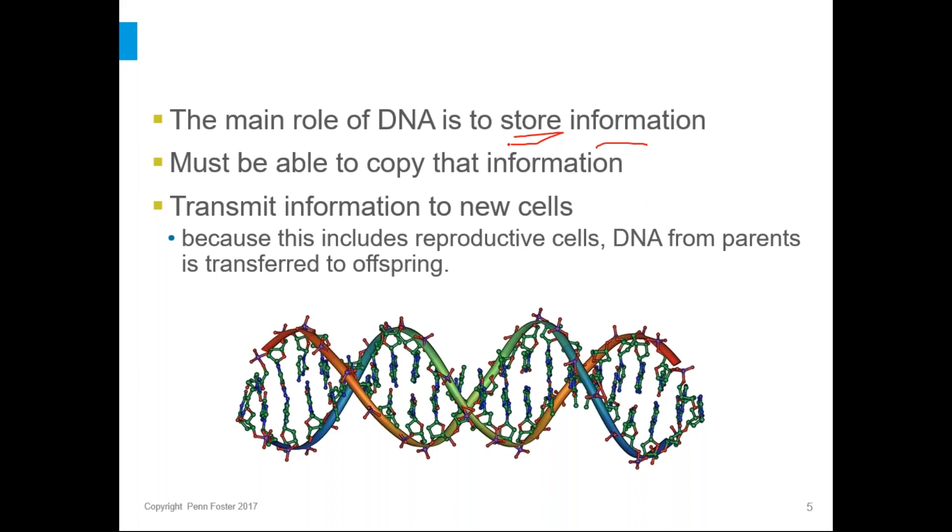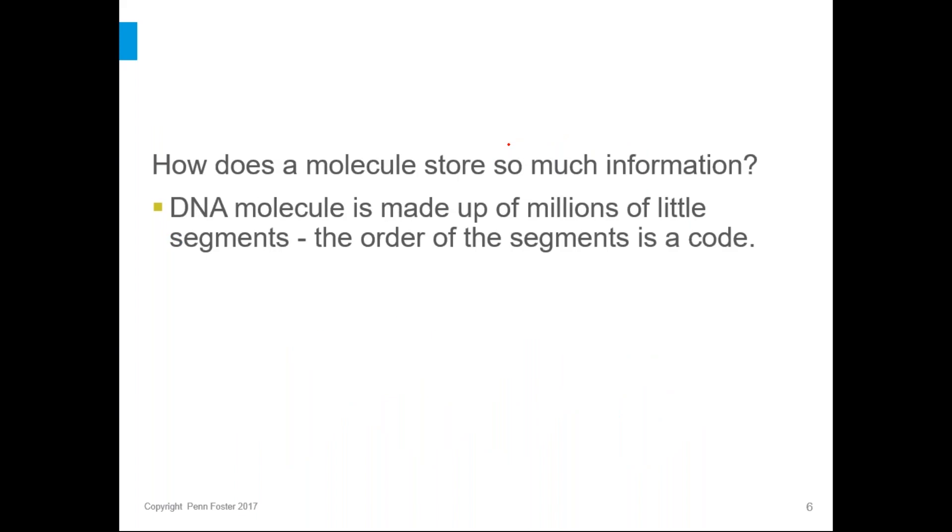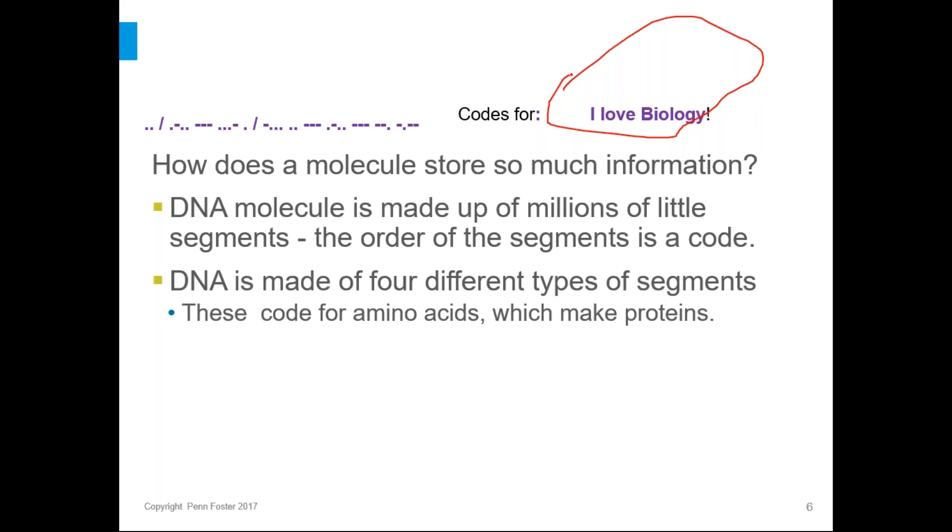So how do we have a molecule that's able to store so much information? Well, the giant DNA molecule is made up of millions of little segments, and the order of those segments is a code. It's just like how Morse code is just dots and dashes, but by understanding the code, we can turn those into letters and words and even entire sentences. DNA is made up of four different types of segments, and those are translated into a code that makes amino acids and those come together to make proteins. So we're going to look at the different type of segments.